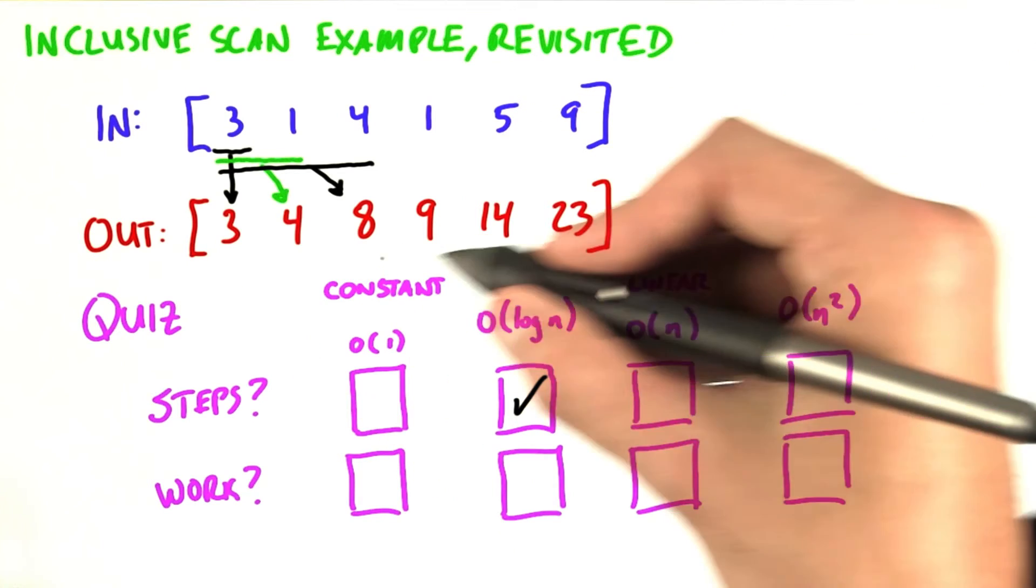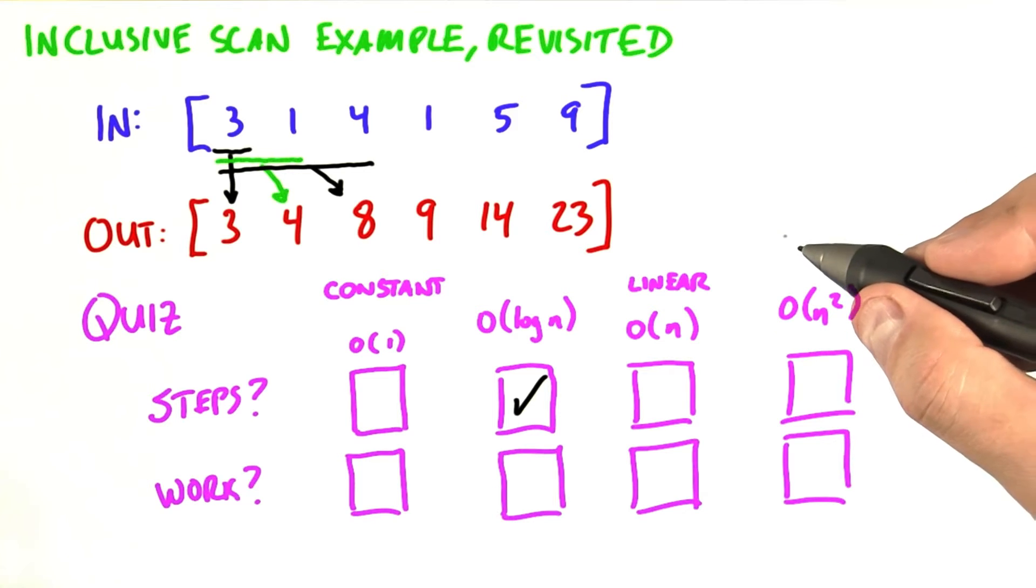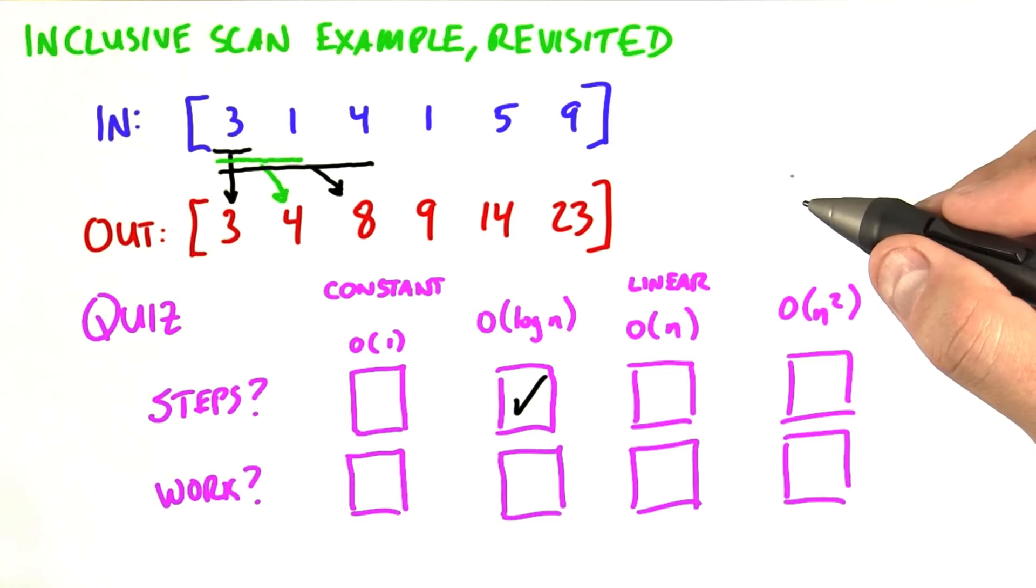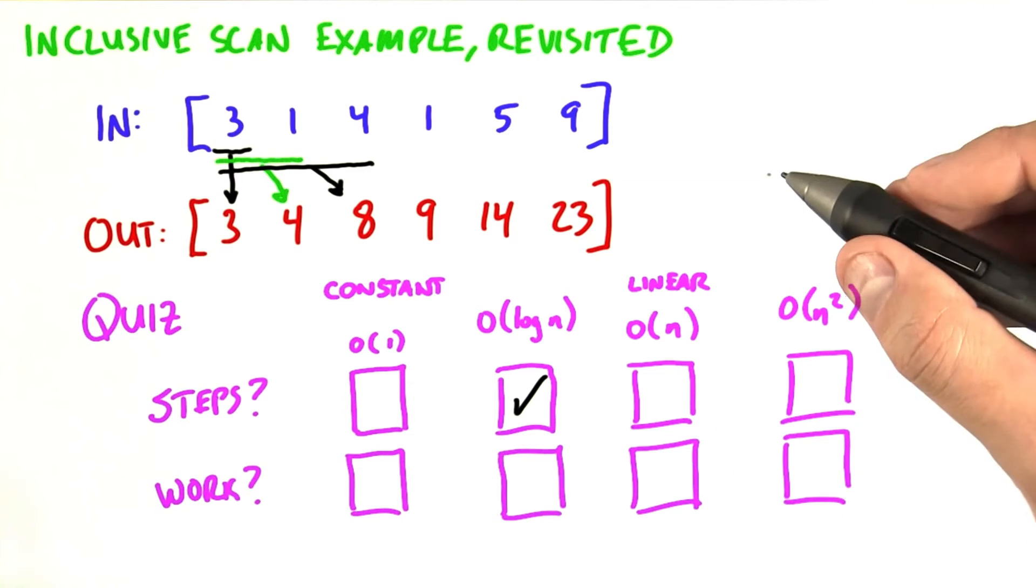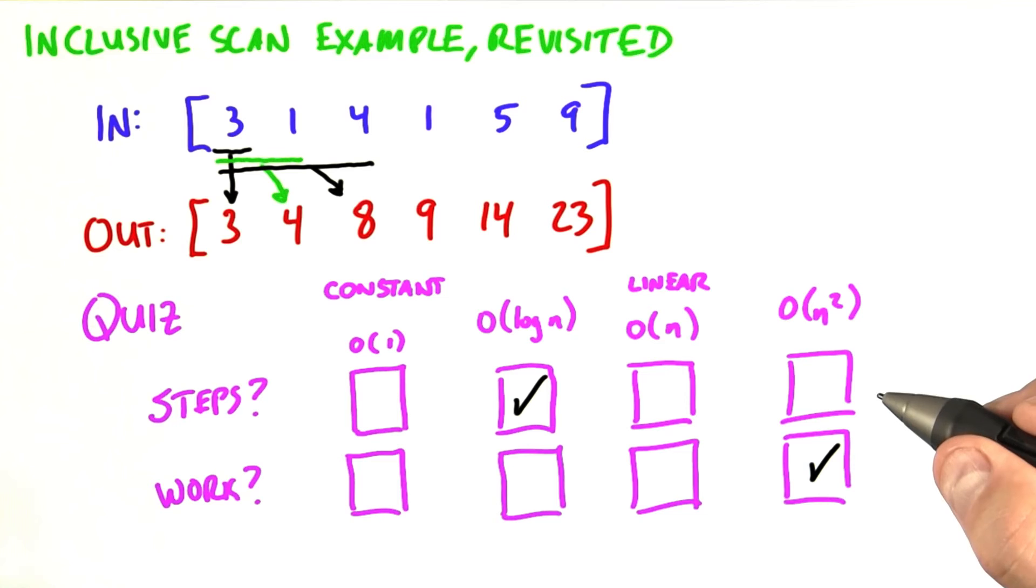And so what we're going to have to do is sum up that whole series, 0 plus 1 plus 2, on to n minus 1. And if we do add up that series, we're going to find that the result is roughly n squared over 2 additions. So the overall amount of work is proportional to the square of the number of elements. We would say that the number of additions overall is order of n squared.